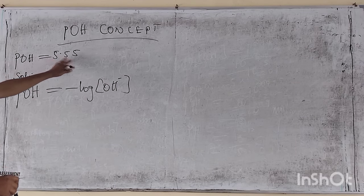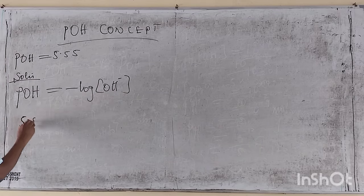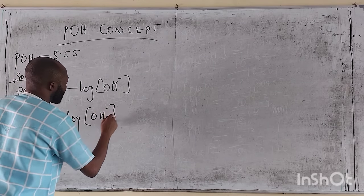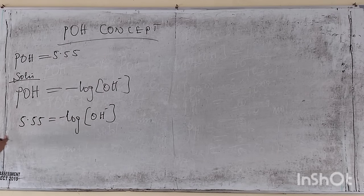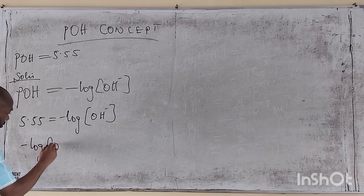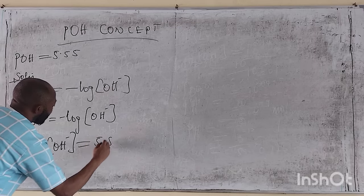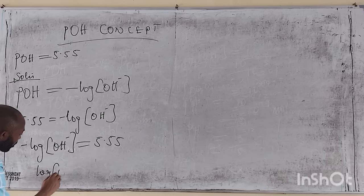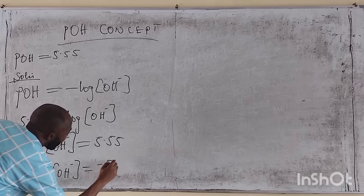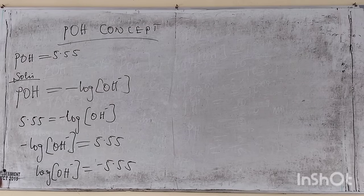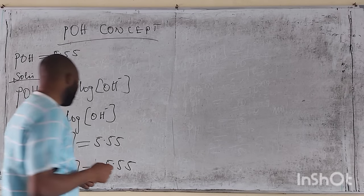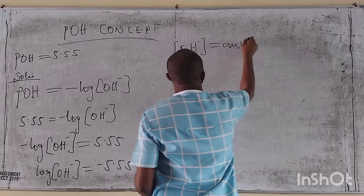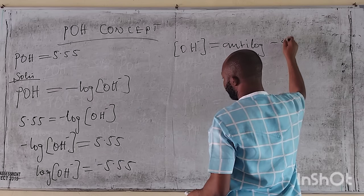Rearranging, minus log OH⁻ equals 5.55. Multiplying through by minus 1, we have log OH⁻ equals minus 5.55. To get rid of the log, we take the anti-log of both sides, so the concentration of OH⁻ equals the anti-log of minus 5.55.